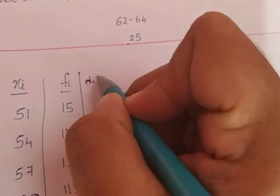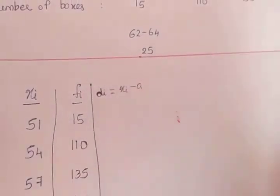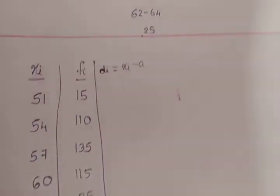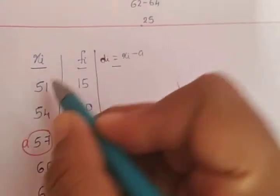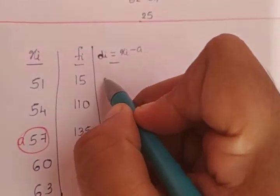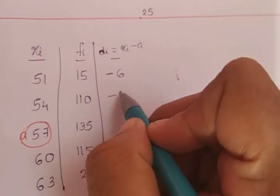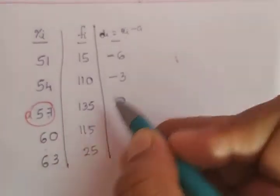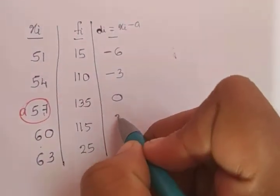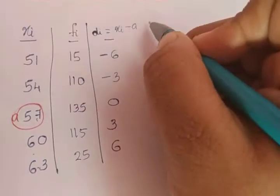di is calculated as xi minus a, where a is the assumed mean. We assume the middlemost value, a = 57. So di values are: 51 − 57 = −6, 54 − 57 = −3, 57 − 57 = 0, 60 − 57 = 3, and 63 − 57 = 6.